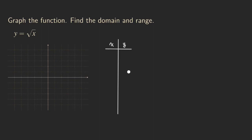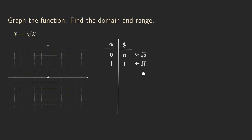First, let's try the simplest value, which is zero. So if we plug zero into x, we are going to get the square root of zero, which is zero. So we get the ordered pair (0, 0) and we are going to plot that point right here. Then we try the next one, which is one. That is also a perfect square, so the square root of one is one. Our next point is (1, 1).